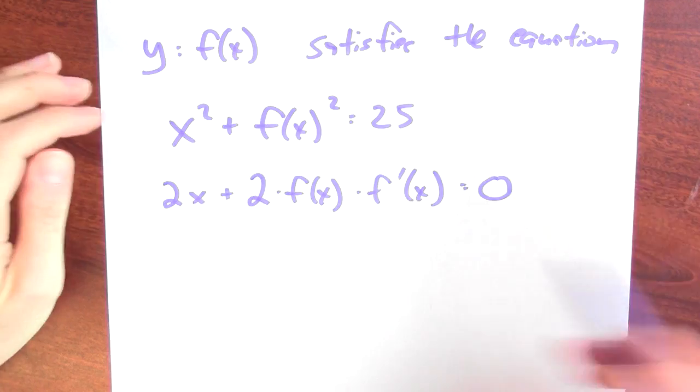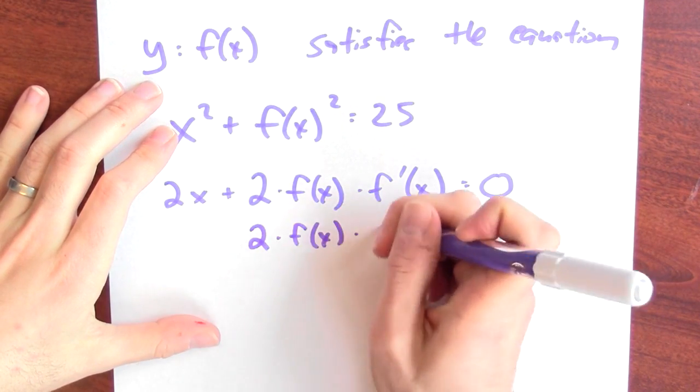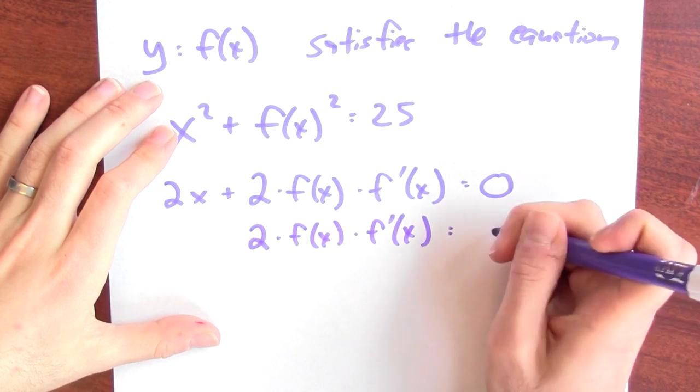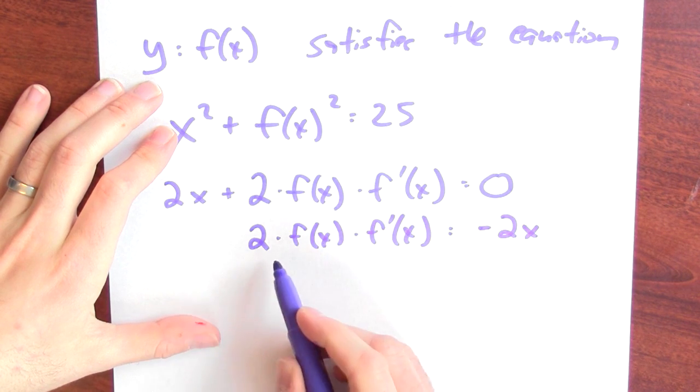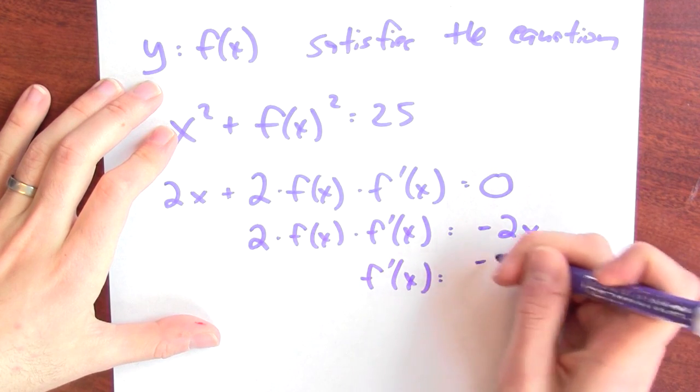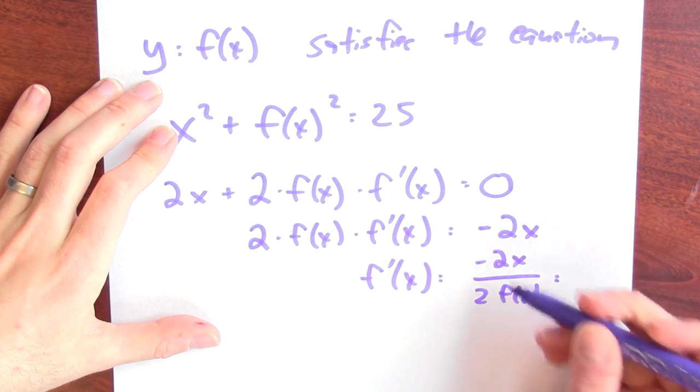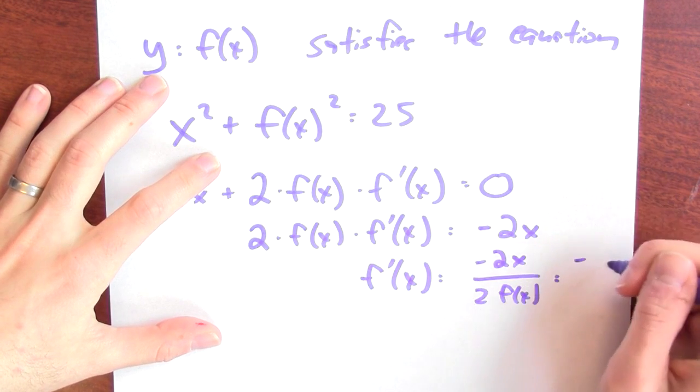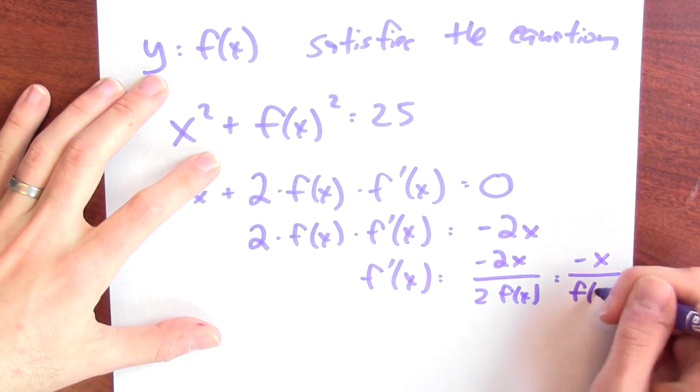Now I can solve. So I'll subtract 2x from both sides and I'm left with 2 times f of x times f prime of x equals negative 2x. And then I'll divide both sides by 2 times f of x. And I'll find that f prime of x is minus 2x over 2f of x. And I can cancel those 2's and just get minus x over f of x.